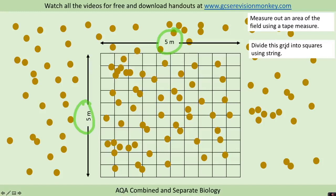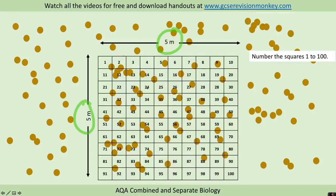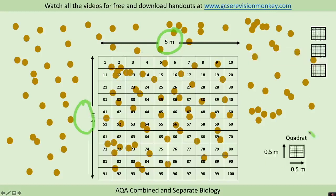So here I've got a 5 meter by 5 meter area, for example. We then divide this grid up into squares using string and number those squares 1 to 100.